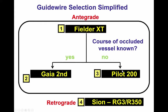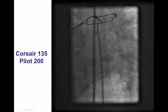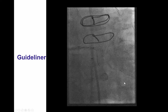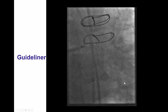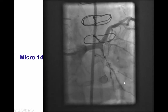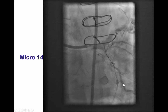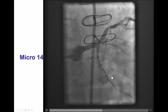The classic approach uses a soft polymer-jacketed wire first, followed by a Gaia Second for tapered caps or a Pilot 200 for non-tapered caps. In this particular case, given the tortuosity of the circumflex, we elected to start with the Pilot 200 guide wire. To our pleasant surprise, we were able to advance the wire further down into the circumflex, and contralateral injection confirmed that we had crossed sub-intimally into the distal vessel with appropriate wire movement.